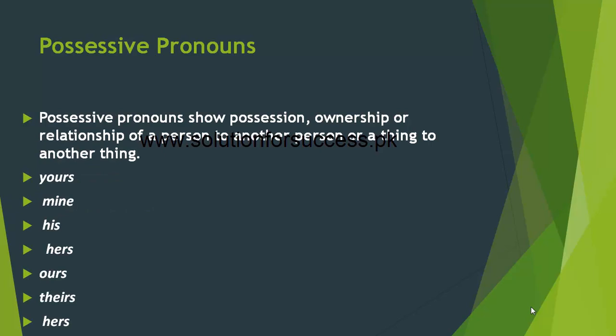Possessive pronouns show possession, ownership or relationship of a person to another person or a thing to another thing. Possessive pronouns ملکیت کو ظاہر کرتے ہیں اور کسی ایک شخص کا کسی دوسرے شخص سے اور کسی ایک چیز کا کسی دوسری چیز سے تعلق کو ظاہر کرتے ہیں۔ Possessive pronouns میں yours, mine, his, hers, ours, theirs شامل ہیں۔